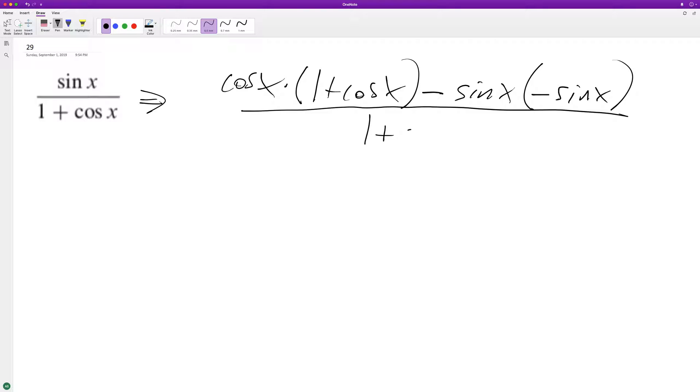So this becomes cosine x plus cosine squared x, and then the minus sine x times minus sine x becomes sine squared x.